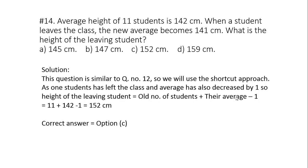Question 14. Average height of 11 students is 142 cm. When a student leaves the class, the new average becomes 141 cm. What is the height of the leaving student? Now this question is similar to question number 12. So we will use the shortcut approach. As one student has left the class and average is also decreased by 1. So height of the leaving student will be given by old number of students plus their average minus 1. So old number of student was 11. Their average was 142. So 11 plus 142 minus 1 and the answer is 152 cm. So the correct answer is option C.